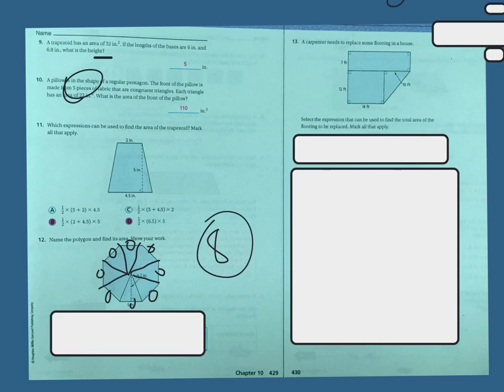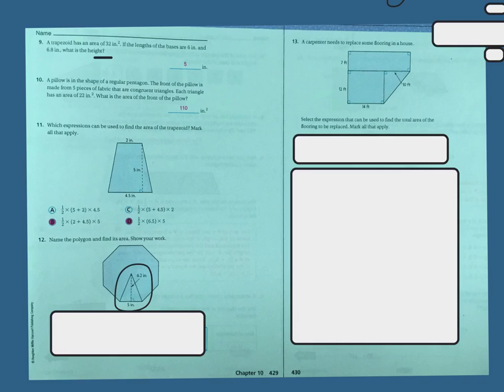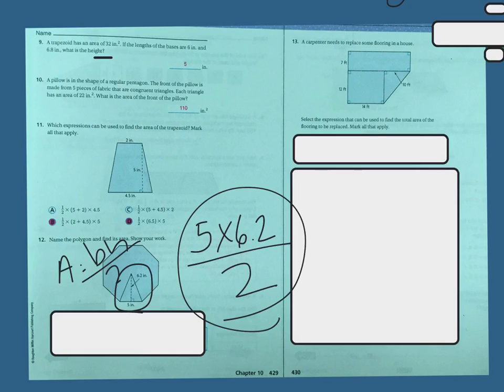So you need to find out how much one of them is worth. So one of them is going to be 5 times 6.2 divided by 2. Because remember, area of a triangle equals base times height divided by 2. So this is going to give me how much one of them is. So 5 times 6.2 is 31. So I have 31 divided by 2. Half of 30 is 15, so it's going to be 15.5. So that means one of these is 15.5. And I remember I said I had 8 of them.